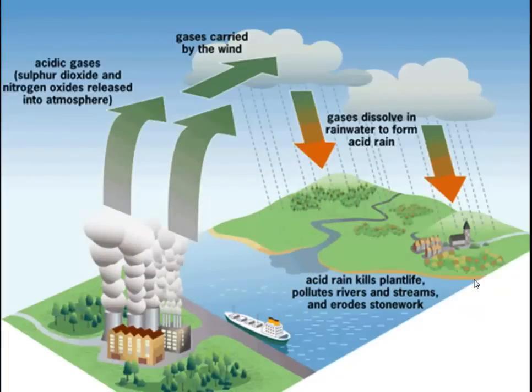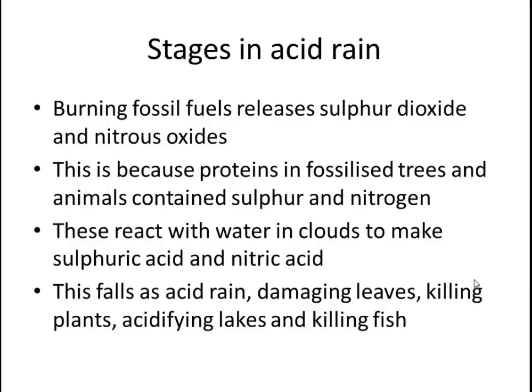So here is our summary of the stages of acid rain. Number one: burning fossil fuels releases sulfur dioxide and nitrogen oxides. Number two: this is because proteins in fossilized organisms contain sulfur and nitrogen. These react with water in clouds to make sulfuric acid and nitric acid, and this falls as acid rain — damaging leaves, killing plants, acidifying lakes, and of course killing fish. Pity the fish.